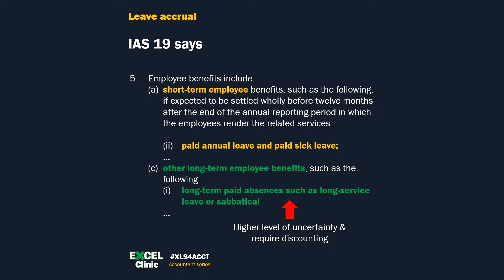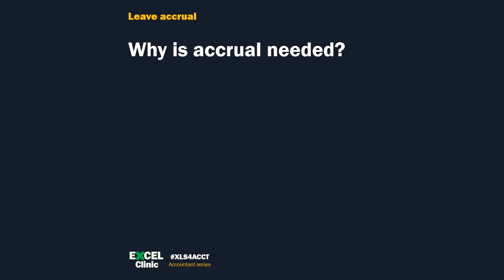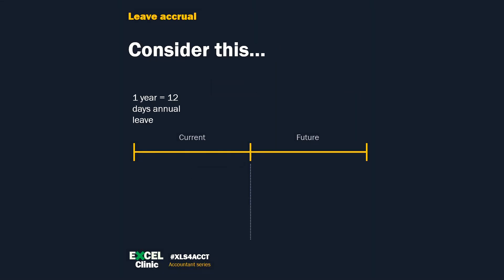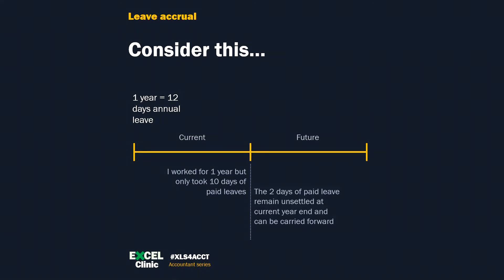What kind of leave needs to be accrued? We need to understand why an accrual is needed. IAS 19 takes the same concept as other accruals — what I call the balance sheet approach. We need to accrue for something we receive but that remains unsettled as at the period end. Consider this example: I am entitled to 12 days of annual leave. I worked for a year but only took 10 days. The remaining 2 days are unsettled at current year end and can be carried forward to next year. This is the unsettled cost as at year end.